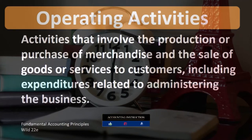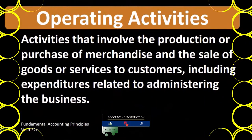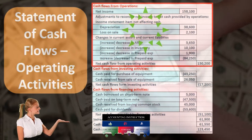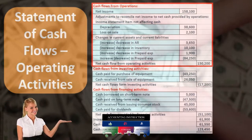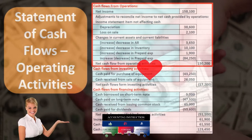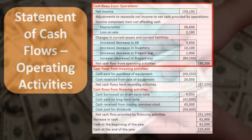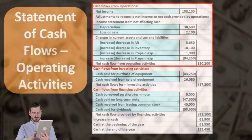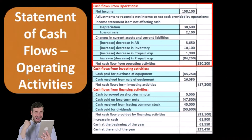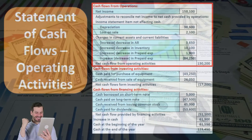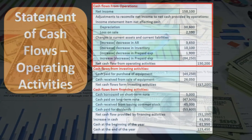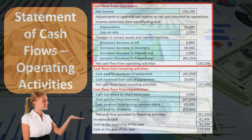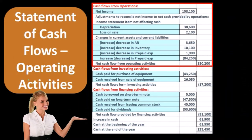We will be considering operating activities in the context of the statement of cash flows, the operating activity being the first of three parts — cash flows from operations, cash flows from investing activities, and cash flows from financing activities. When we think of cash flows from operating activities, we're basically taking the income statement and converting that net income, in one format or another, either the direct method or indirect method, to net income on a cash basis, or net cash flows from operations.